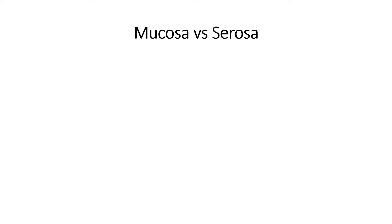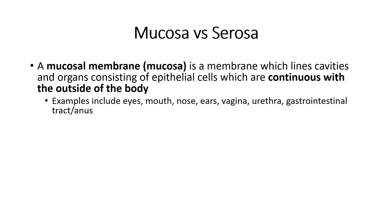First, let's define the difference between mucosa versus serosa. A mucosal membrane, also known as mucosa, is a membrane which lines cavities and organs consisting of epithelial cells which are continuous with the outside of the body. So the eyes, mouth, nose, ears, vagina, urethra, gastrointestinal tract, and anus will have mucosal membranes.